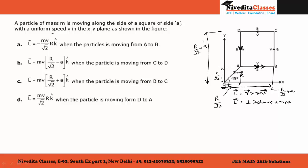So the distance is either R divided by root 2 plus A, or R divided by root 2. As you can see in option B, the distance is taken as R divided by root 2 minus A, which is incorrect. So statement B is the incorrect statement.